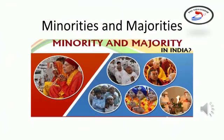Another important function that a constitution plays in a democracy is to ensure that a dominant group does not use its power against other, less powerful people or groups. Such unhealthy situations can occur in democratic societies too, where a majority can continuously enforce decisions that exclude minorities and go against their interests. The communities whose population is less than the major community are called minority communities. The majority is the social group considered to have the most power in a particular place. The constitution usually contains rules that ensure that minorities are not excluded from anything routinely available to the majority.